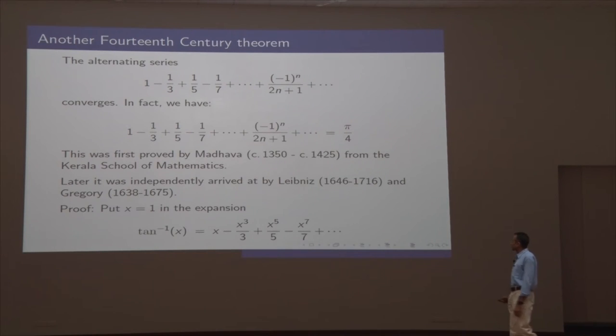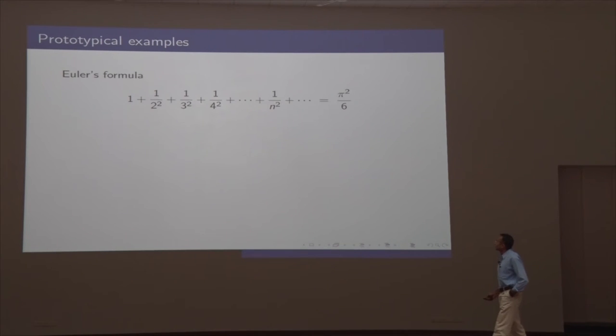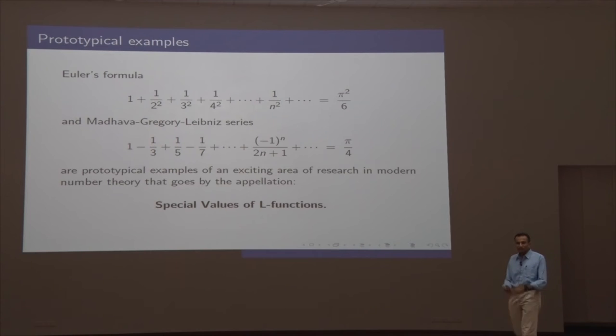And a quick proof: tangent inverse of x, this is a good-looking function. You can expand this. It's smooth. It's infinitely differentiable. There's some expansion of this type. And if you plug in x equals one, you know that the angle for which tangent of some angle is one is pi by four. So that's that pi by four. So these two formulae, Euler's formula and Madhava, I want to make this case that these are actually prototypical examples of a very beautiful area of number theory, which goes by this name, special values of L functions. Okay?